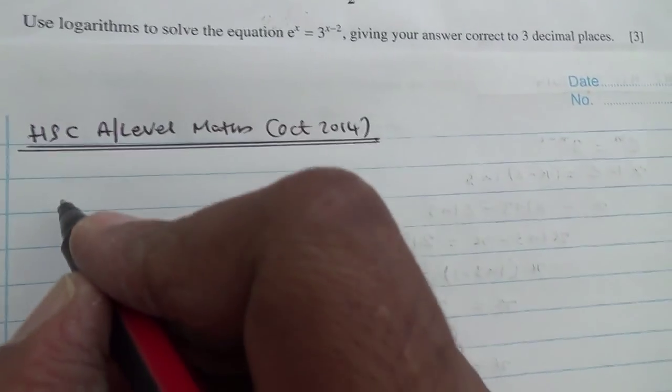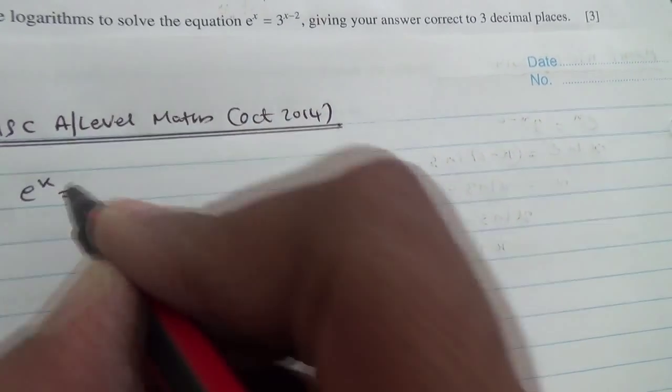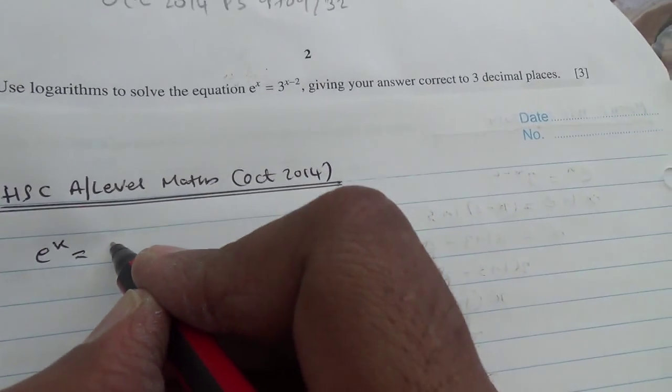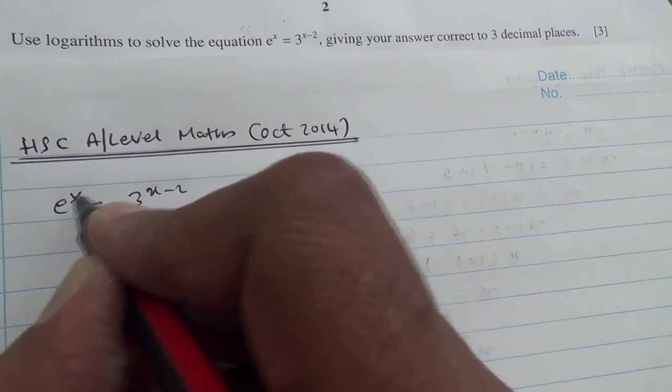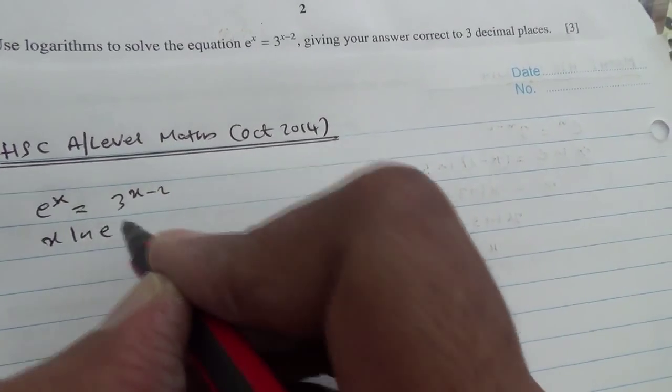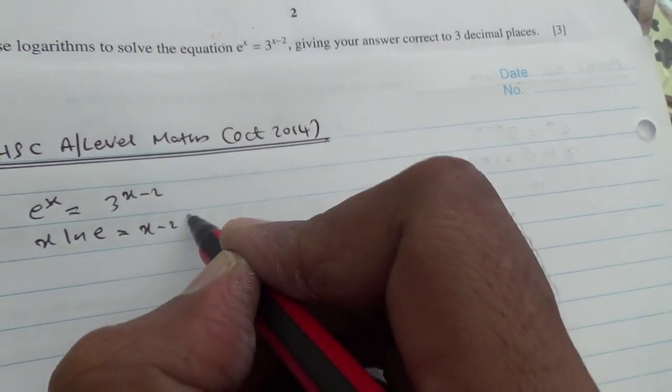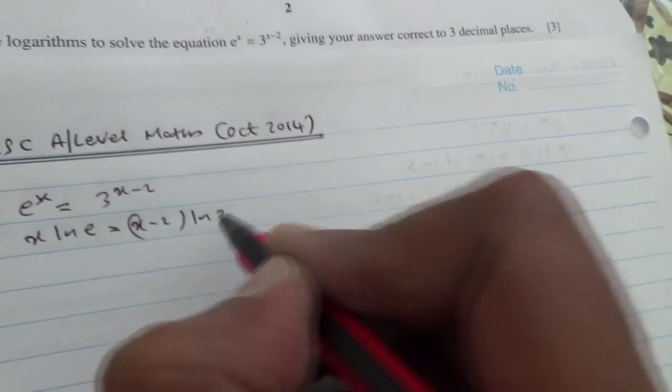Okay, so we have e to the power of x is equal to 3 to the power of x minus 2. So, what can we do?